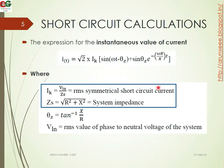The expression for the instantaneous value of current is: i = √2 × IK × [sin(ωt − θz + θz) + sin(θz) × e^(−ωt × R/X)]